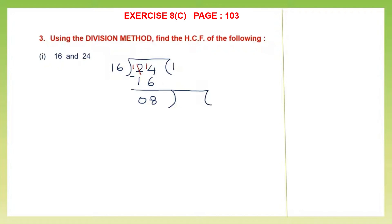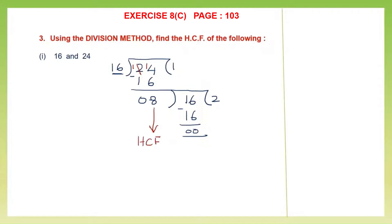So 8 is our divisor this time and 16 becomes our dividend. Now I'm going to divide 16 by 8. 8 twos are 16, minus 0. We keep on doing this division till we get the remainder 0, and the last divisor that we have used which gives us the remainder 0 is our HCF. So the HCF of 16 and 24 is 8.